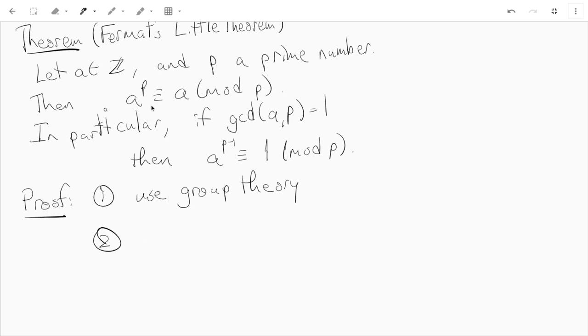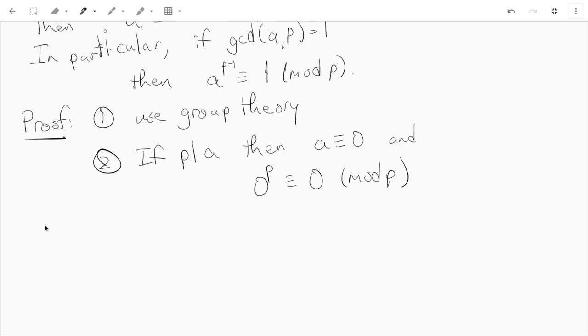First note that if p divides a, here's equation one, if p|a, then this equation is true. And notice 0ᵖ ≡ 0 mod p. So we're done. So we may assume that p does not divide a. In other words, since p is a prime number that doesn't divide a, that means that gcd(p,a) = 1.